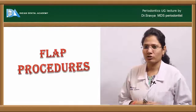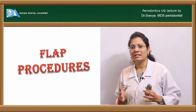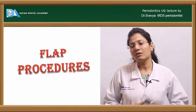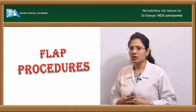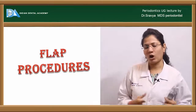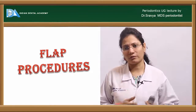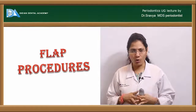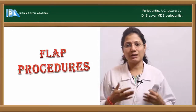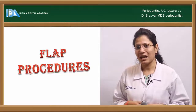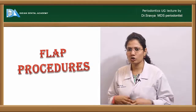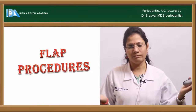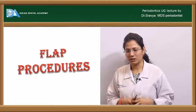The topic is flap procedures. The best method to treat any deep periodontal pocket would be flap surgery — a surgical reflection of the periodontal tissue so that you can visualize the underlying areas, that is the bone and the roots, so that you can get better accessibility to all the root deposits. The infected granulation tissue can be removed and then you can close back the flap and wait for the healing period.